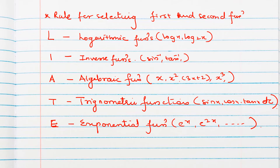When we have the integration of a product of two functions, we identify whether each function is logarithmic, inverse, algebraic, trigonometric, or exponential. According to this classification, we select the first and second function in the LIATE order.